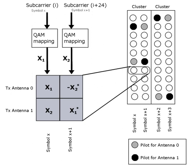Space-time codes may be split into two main types. Space-time trellis codes distribute a trellis code over multiple antennas and multiple time slots and provide both coding gain and diversity gain. Space-time block codes act on a block of data at once and also provide diversity gain but don't provide coding gain.